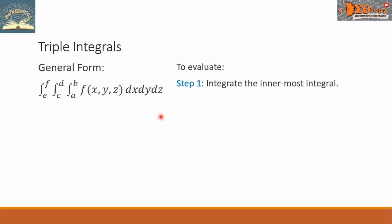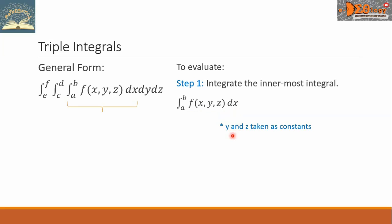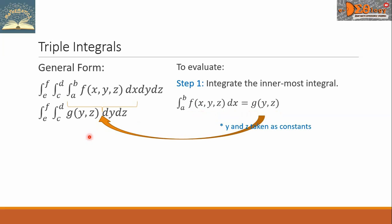To evaluate this, step one is to integrate the innermost integral, which will be in here. We can copy this inner integral down here and integrate the function f with respect to x. It means y and z are taken as constants. When we simplify this, the answer will be a function g of y, z. And this new function, we're going to substitute in here. When we substitute, it will be like this. We can see now that the triple integral becomes a double integral.